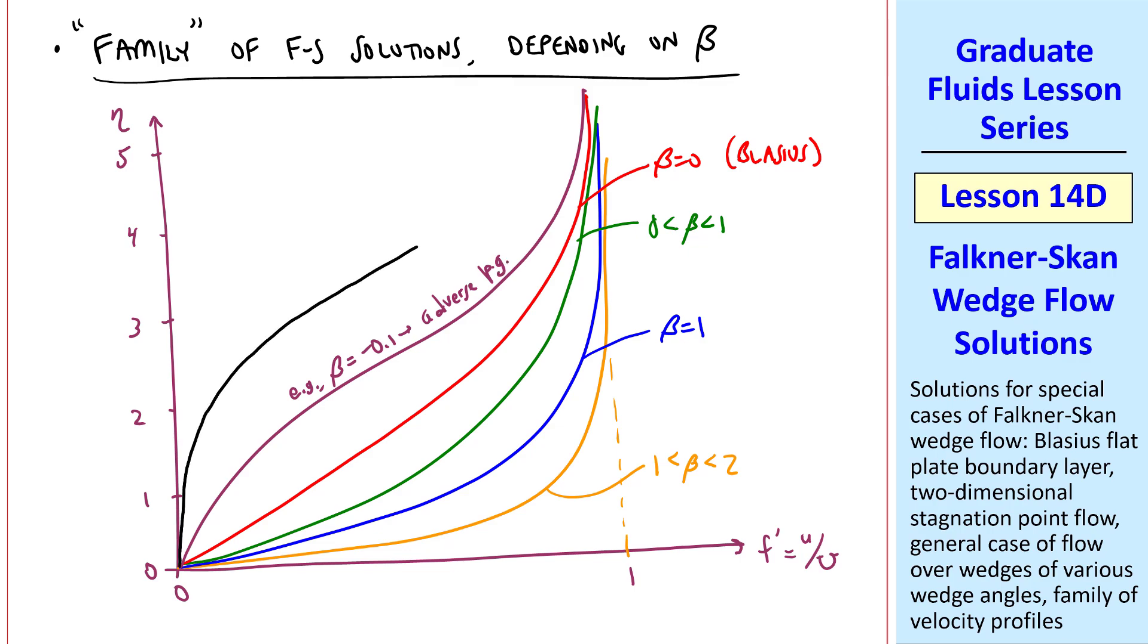And finally, when beta is negative 0.198838, we have the separating profile with a zero slope at the wall. We can keep going and plot profiles for other betas, like negative 0.25. But as we've discussed before, this is unphysical, since the boundary layer equations break down beyond the separation point, and you have reverse flow, destroying the parabolic nature of the boundary layer equations.